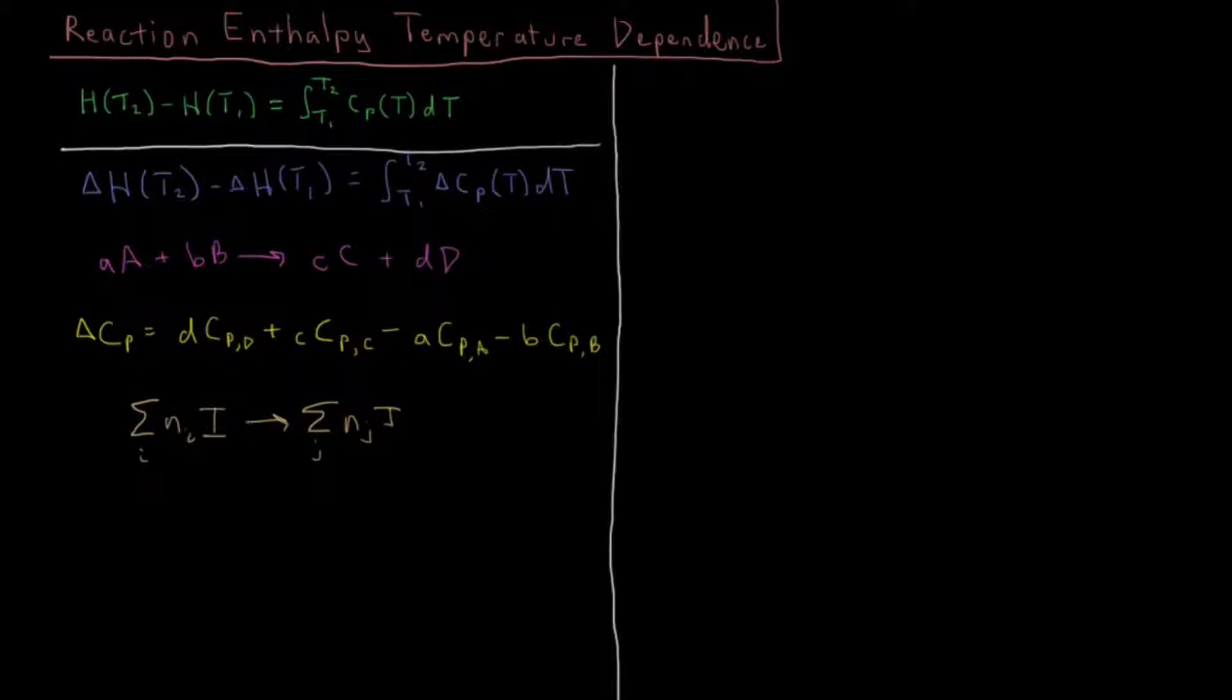Then delta Cp of T is the sum over all products of number of moles of each product times Cp of j of T, minus the sum over the reactants - negative sign because we're canceling that out, that's the initial state - number of moles of reactant i times heat capacity of reactant i at that temperature.